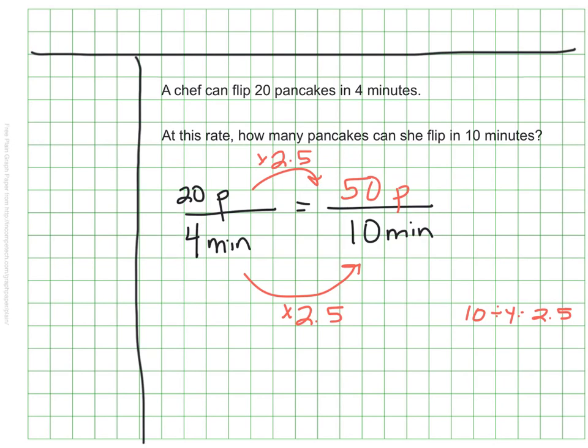She can make or flip 50 pancakes in 10 minutes. So sometimes we have to pay attention to the fact that it won't always be a whole number, but we can work our way through it by figuring out what our scale is, sometimes by doing a little bit of backtracking and division.